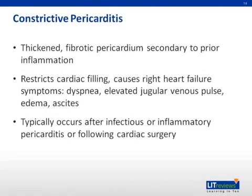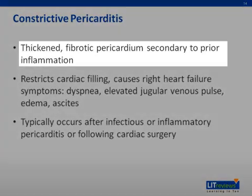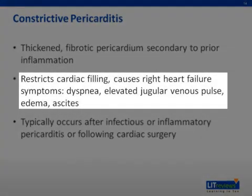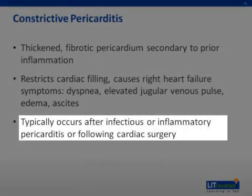I also want you to be familiar with constrictive pericarditis — another complication sometimes seen years after an episode of pericarditis. This is the development of a thickened fibrotic pericardium secondary to prior inflammation. This thick sac restricts cardiac filling, causing right heart failure symptoms such as dyspnea, elevated jugular venous pulse, edema, and ascites. This typically occurs after an infectious or inflammatory pericarditis or following cardiac surgery.